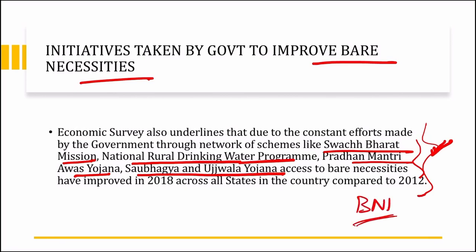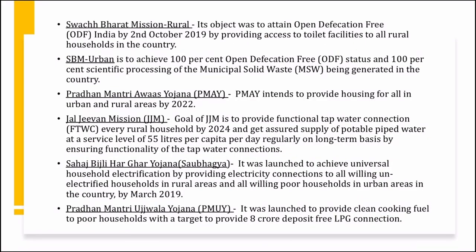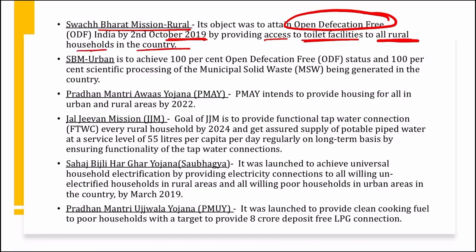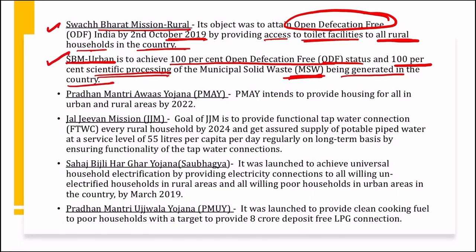Let us see these schemes in detail. First, Swachh Bharat Mission Rural — its objective was to attain open defecation-free India by 2nd October 2019 by providing access to toilet facilities to all rural households in the country. Next, Swachh Bharat Mission Urban — its target was to achieve 100% open defecation-free status and 100% scientific processing of municipal solid waste being generated in the country.